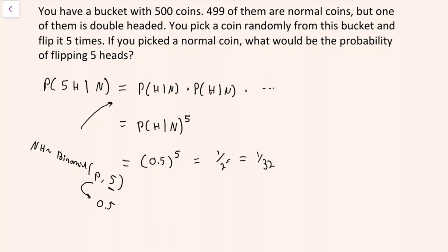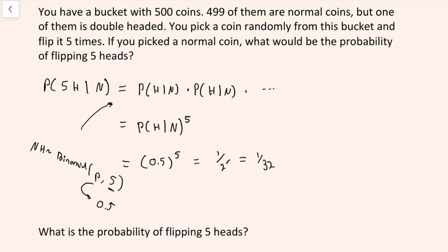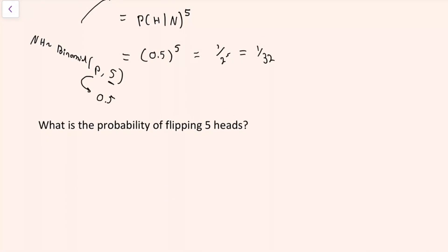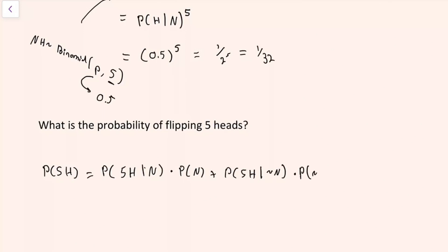At this point you feel like you're doing pretty well, and then the interviewer asks a follow-up question: what is the probability of flipping five heads? This question is a bit different — it's testing whether or not you know the law of total probability. The probability that you get five heads can be broken down into the probability that you get five heads if you pick the normal coin times the probability that you pick the normal coin, plus the probability that you get five heads if you picked the non-normal coin times the probability of picking the non-normal coin.